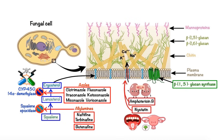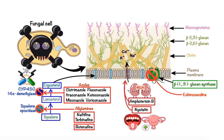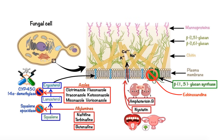The class of compounds known as echinocandins inhibits beta-glucan synthase, which leads to a decrease of beta-glucans in the cell wall, thereby causing osmotic instability and ultimately cell lysis. Examples of drugs that belong to this class are anidulafungin, caspofungin, and micafungin. The major advantages of echinocandins relative to other antifungals include their activity against azole-resistant Candida strains as well as Aspergillus species.